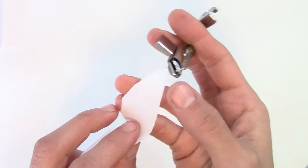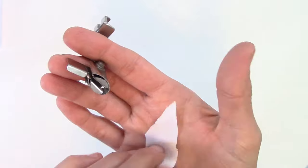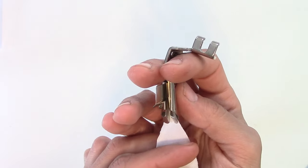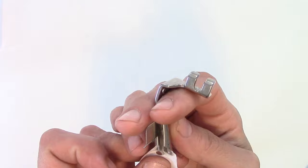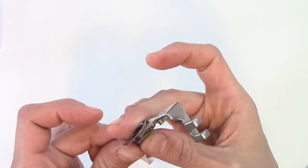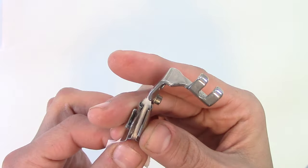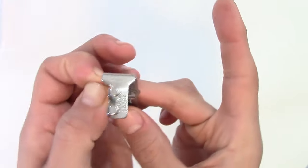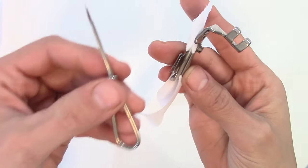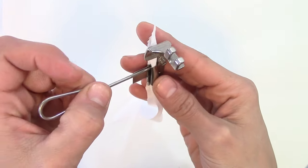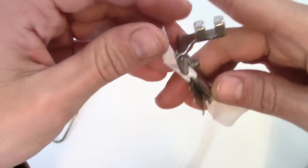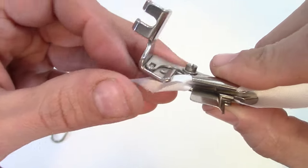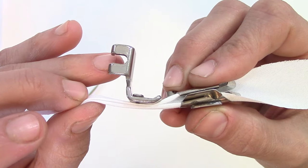To get started, cut the tip of your bias strip to a point to make the initial feeding easier. Slot it through the outside of the tool and, using light pressure, advance it through. You can use the stiletto tool or long pin to help move it along. As you can imagine, when used on the machine, the stitch would lock the rolled edges in place.